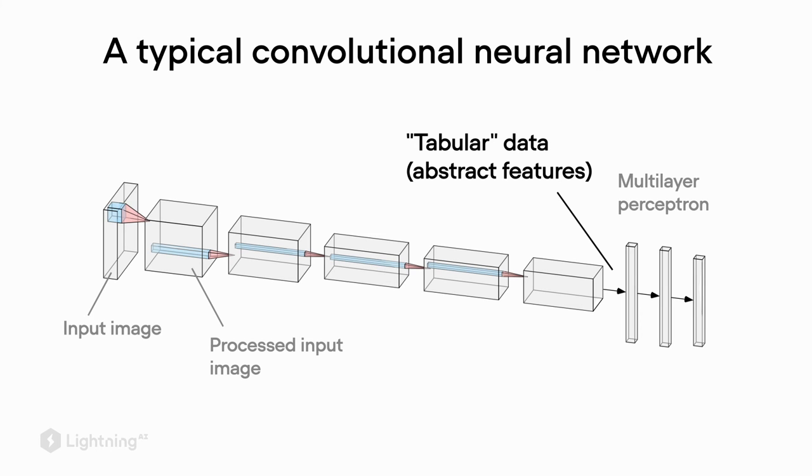In previous units, we assumed that we or someone else did the manual feature extraction, so we worked with the tabular data directly. Here, we feed an input image that goes through different convolutional layers to have a tabular-like representation that then feeds into this multilayer perceptron part.